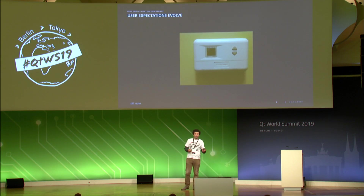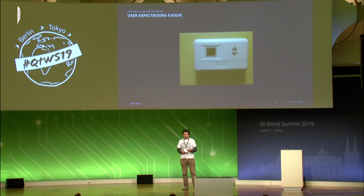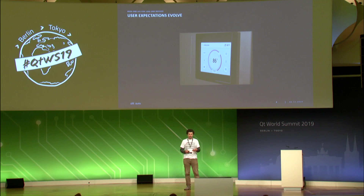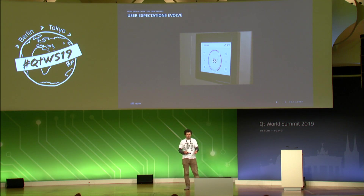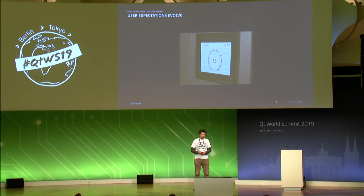We need to first understand what high-end UIs are. User expectations evolve — just a few years back, a basic thermostat was enough. You could change the temperature, turn heating on and off, and that was fine. But in the 21st century, everyone expects a thermostat to be touchable, colorful, running at 60 FPS, with no glitches. My children even try to tap our TV set because they don't understand it can't be touched. Users want smooth, intuitive interfaces similar to their smartphones — nice animations, really colorful.